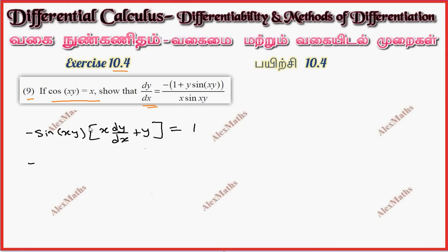Minus x into sin, so minus x sin(xy) into dy by dx. That is minus y sin(xy) equal to 1, so minus x sin of xy into dy by dx...